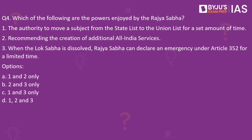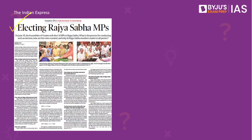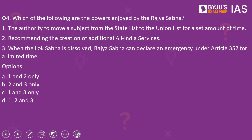Moving on to the fourth question: Which of the following are the powers enjoyed by the Rajya Sabha? Statement 1 reads — the authority to move a subject from the state list to the union list for a set amount of time. Statement 2 reads — recommending the creation of additional All India services. Statement 3 reads — when the Lok Sabha is dissolved, Rajya Sabha can declare an emergency under Article 352 for a limited time. The context is an Indian Express article on the upcoming biennial Rajya Sabha election, discussing the election process and special powers of the Rajya Sabha. The first statement is correct — this power flows from Article 249.